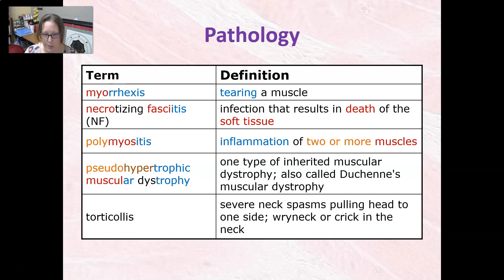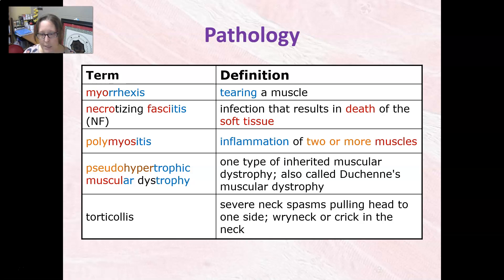Pseudohypertrophic muscular dystrophy is a type of inherited muscular dystrophy. It is also called Duchenne's muscular dystrophy. Torticollis is a French word that means twisted neck. It's a severe neck spasm that pulls the head to one side — also called wry neck or a crick in the neck.